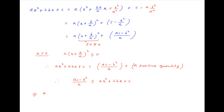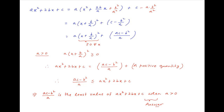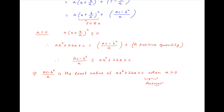Which means that ac minus b squared upon a is the least value of the expression ax squared plus 2bx plus c when a is greater than 0. This completes the proof of the first part of the problem. Next, consider the case when a is less than 0.